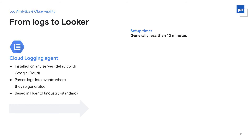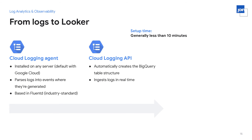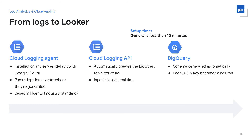The process starts with the GCP Cloud Logging agent, which can be installed on any server. If you're using a server hosted in GCP, it comes with the Cloud Logging agent installed by default. It parses logs into events where they're being generated — it's based on FluentD, which is an industry standard — and then passes those logs into the Cloud Logging API. That automatically creates the BigQuery table structure, ingests the logs in real time, and passes the data into BigQuery where the schema is generated automatically. It even handles semi-structured data: JSON objects are mapped into columns that can be used easily within the data warehouse and within Looker. This end-to-end process can be set up in less than 10 minutes.